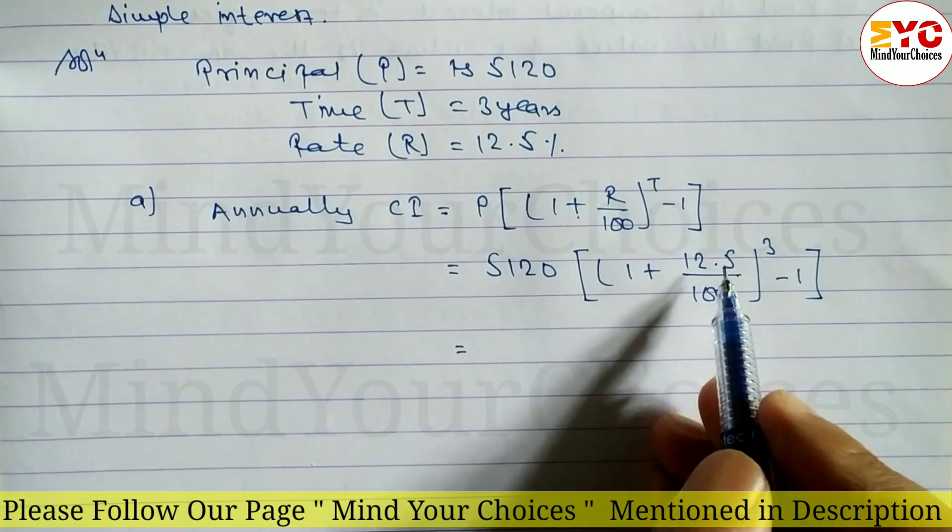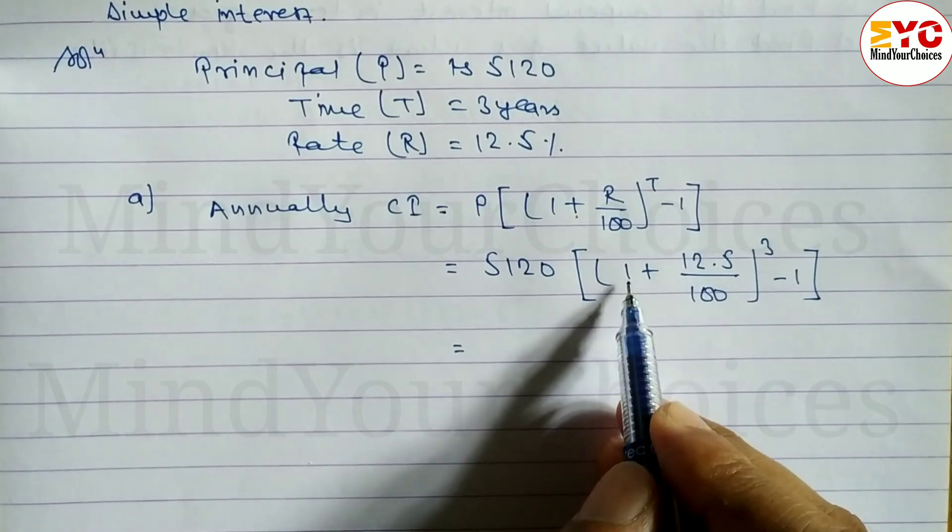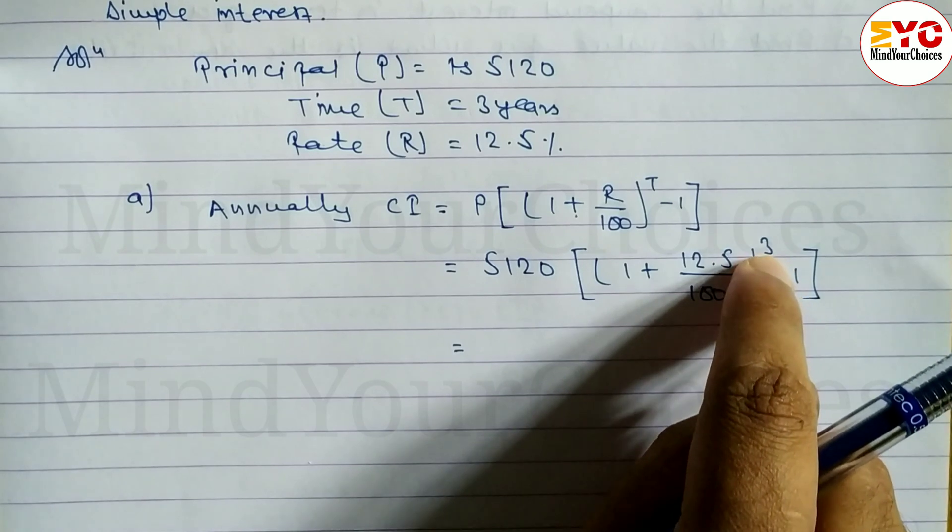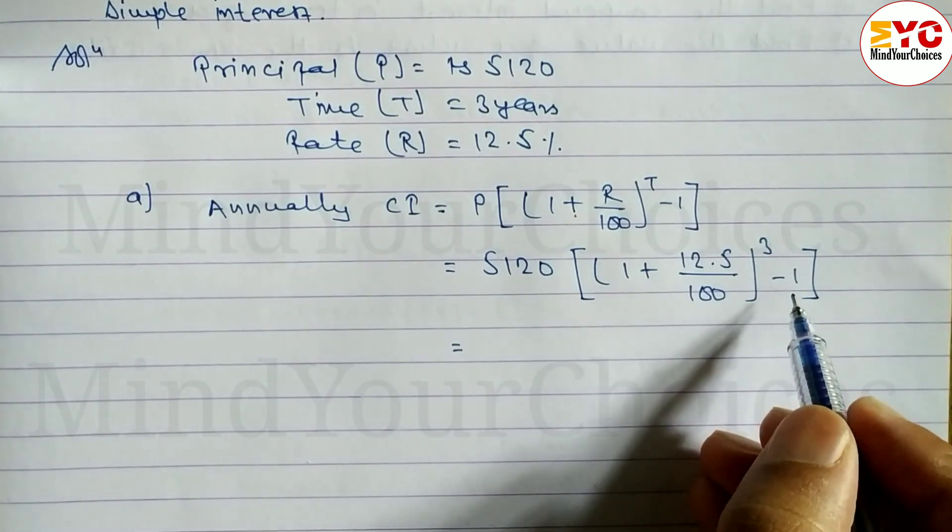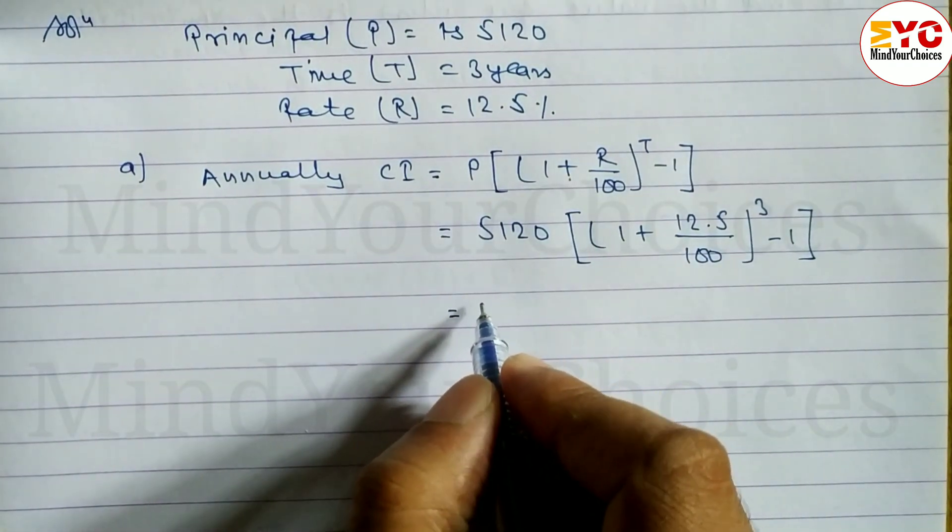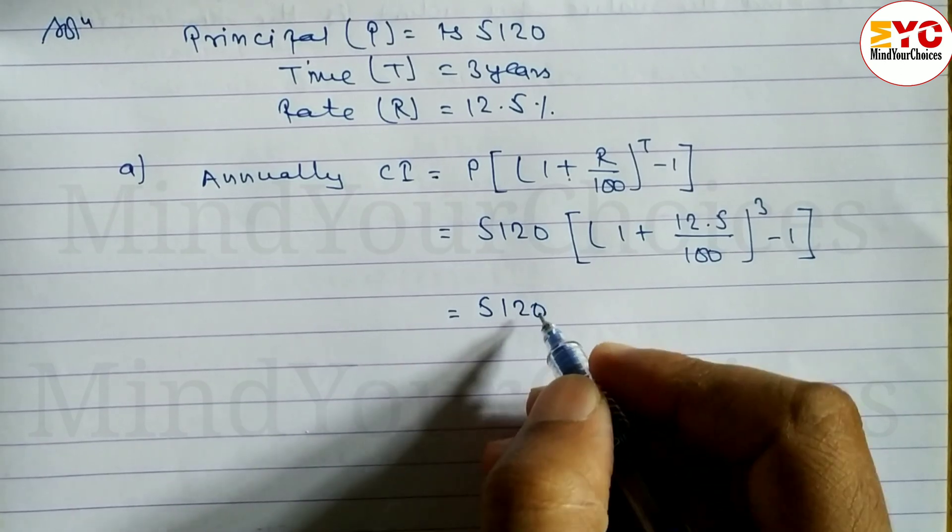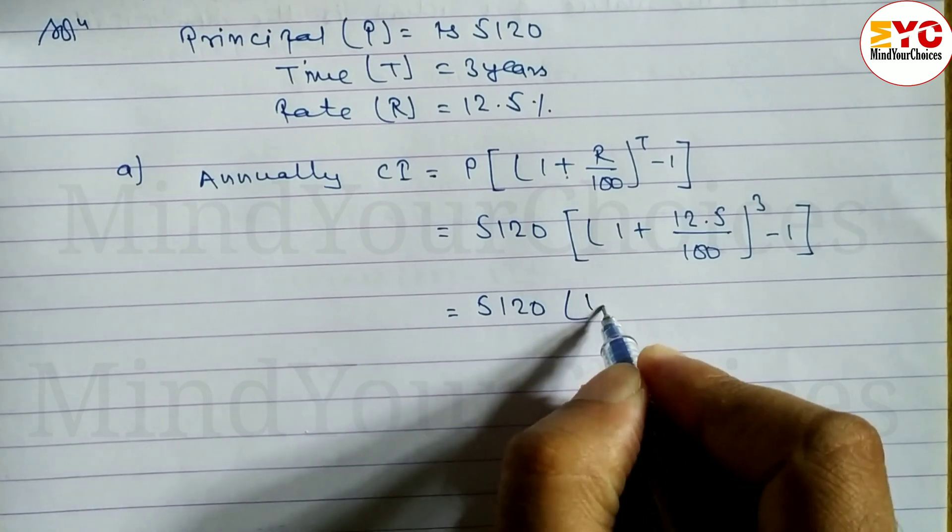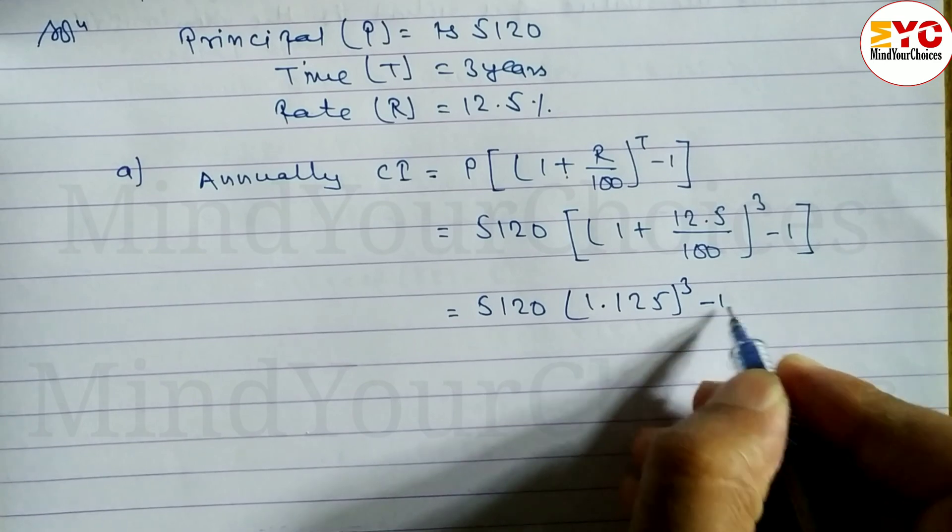Calculate 12.5 divided by 100, then add 1. When you get the answer, multiply by 5,120. I will write it: 5,120 multiplied by (1.125)^3 - 1.